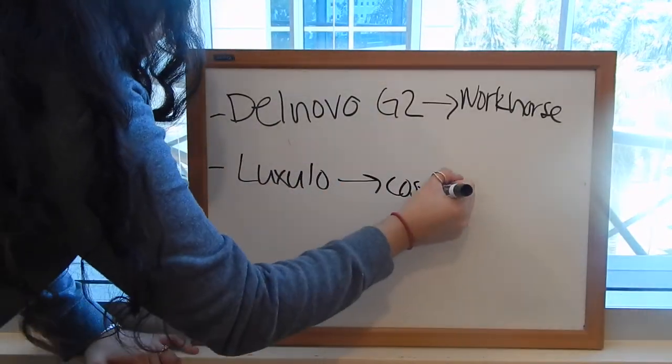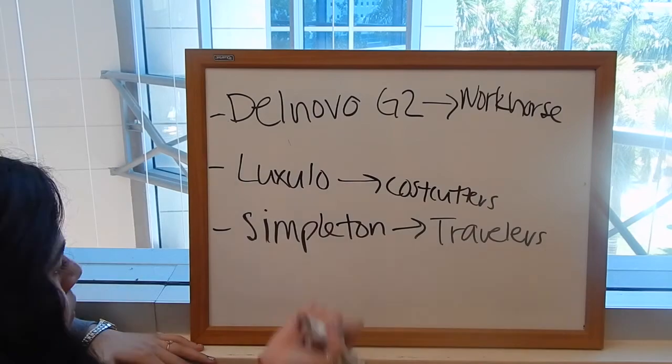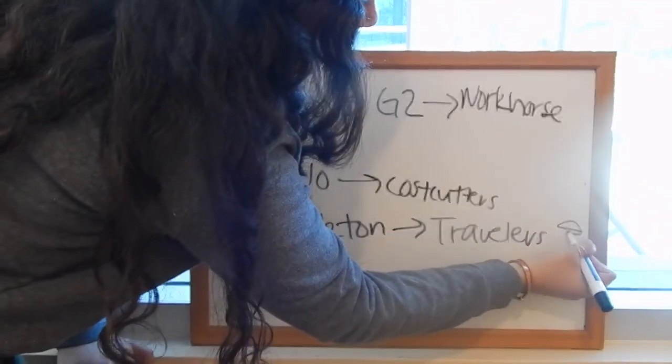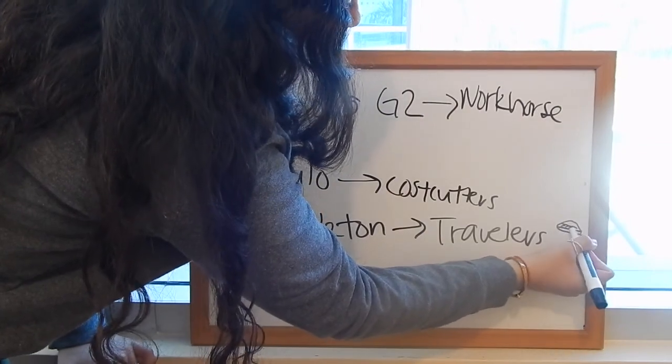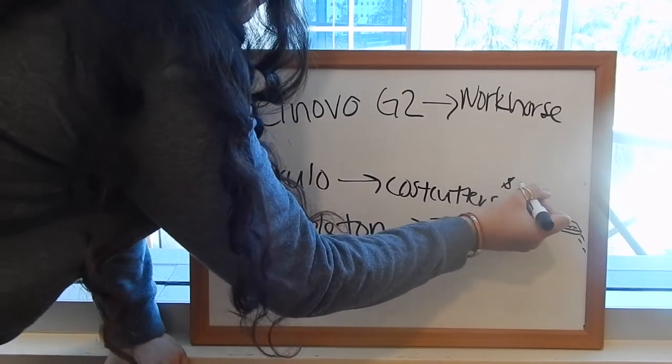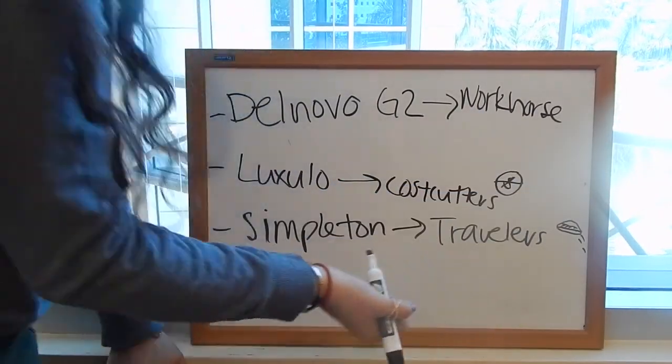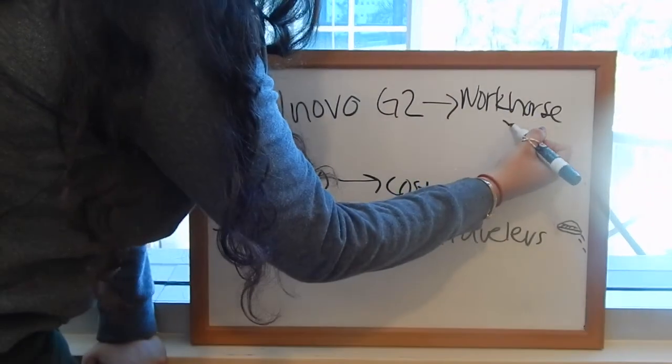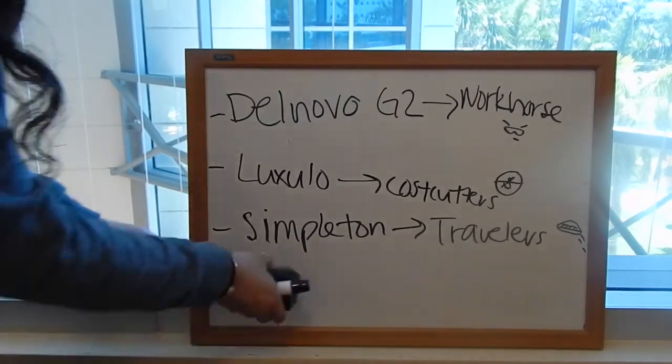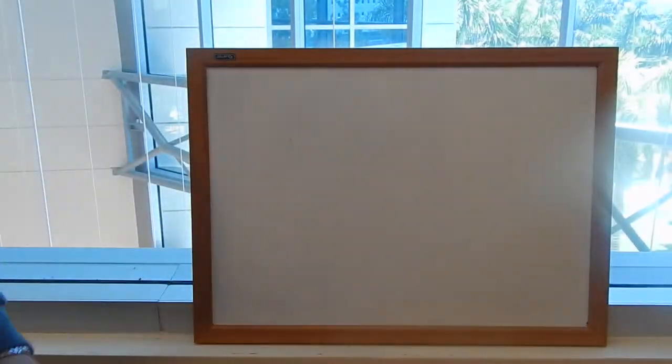So what changed? We focused on Workforce and Costcutter still, as well as Travelers. We created a new brand named Simpleton, and we vamped our Del Novo and Del Novo G2. By adding new components, we saw our competitors added. Oh yeah, we had to switch our brands around. Remember that fun fact? Well, Del Novo did well with Workforce after we modified it, and Luxolo did well with Costcutters.